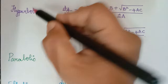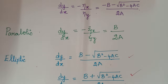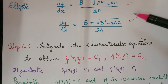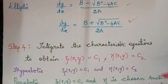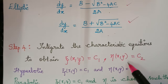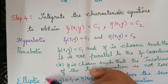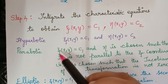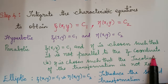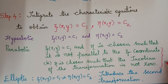After classifying the PDE as hyperbolic, parabolic, or elliptic, we find the characteristic equations and then the next step is to integrate them. The characteristic equations obtained in step 3 are integrated to get solutions xi and eta, where xi(x,y) = c1 and eta(x,y) = c2. For parabolic type, xi(x,y) equals c1, and eta is chosen such that it is not parallel to the xi coordinate and the Jacobian of the transformation is not zero. This will be explained in detail when solving a parabolic example.